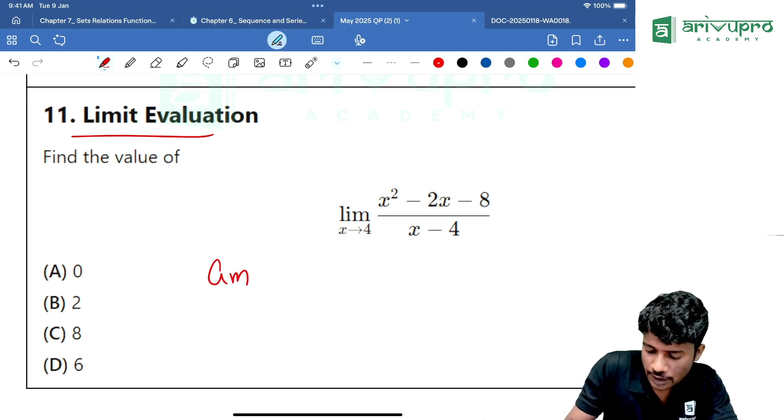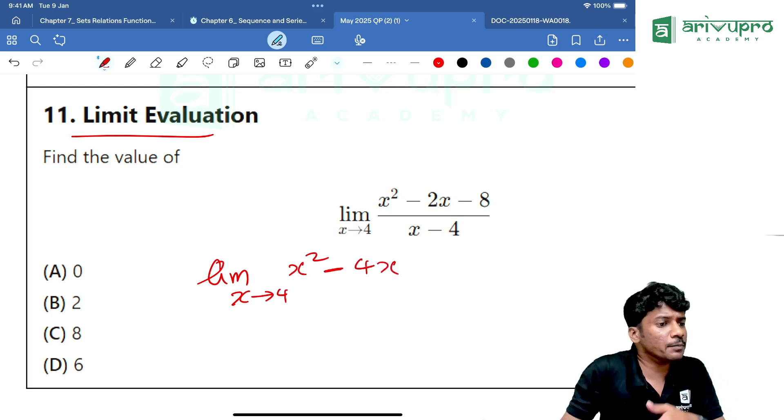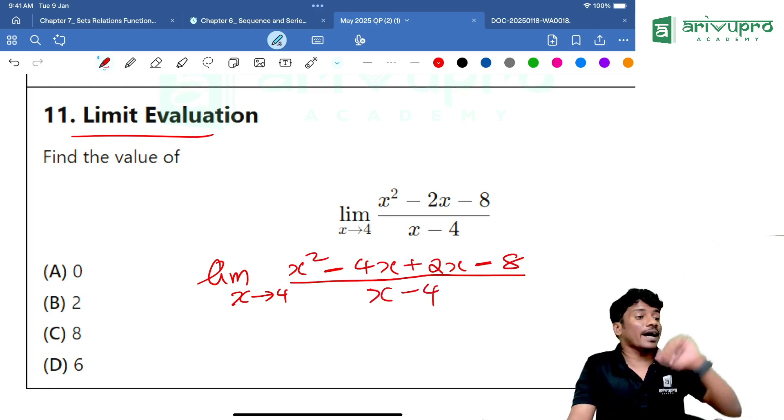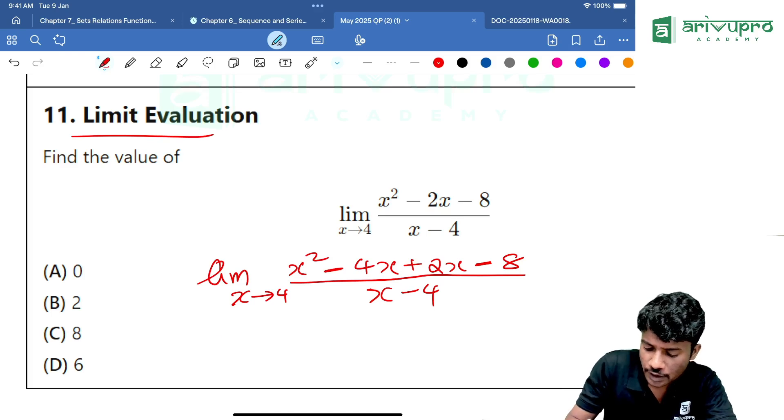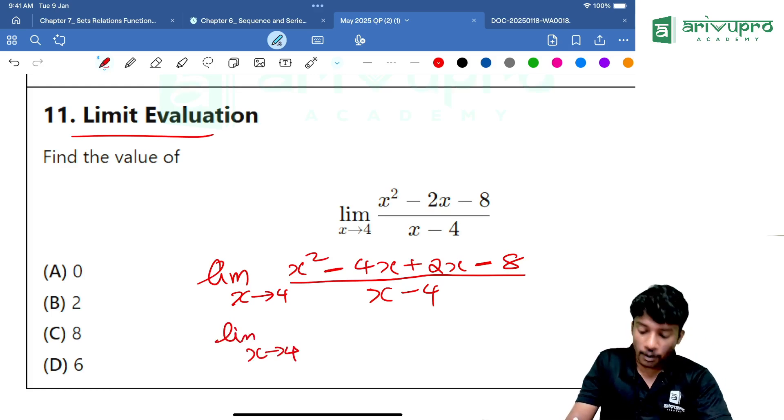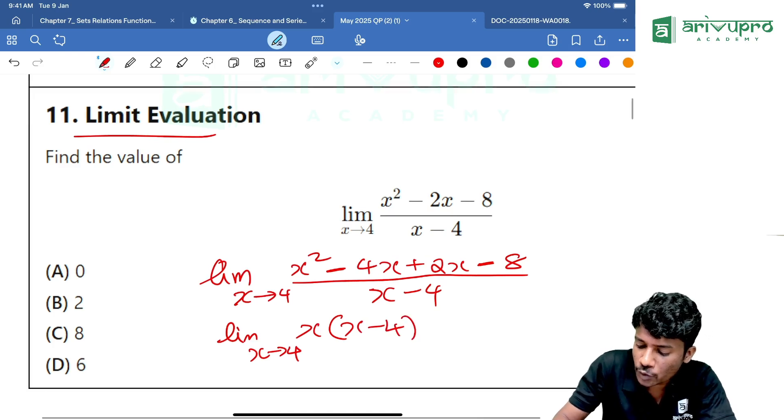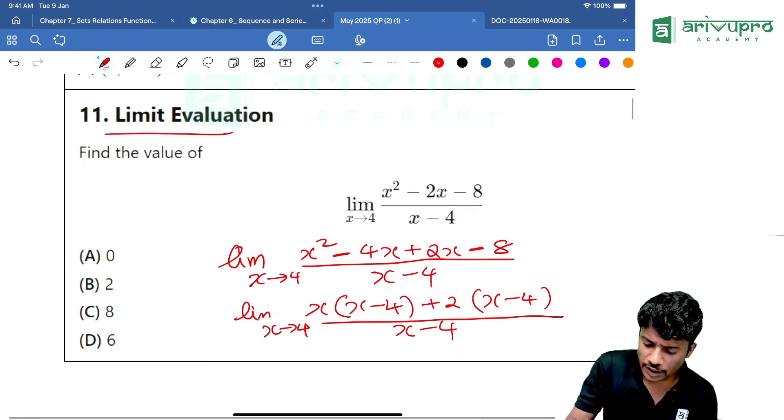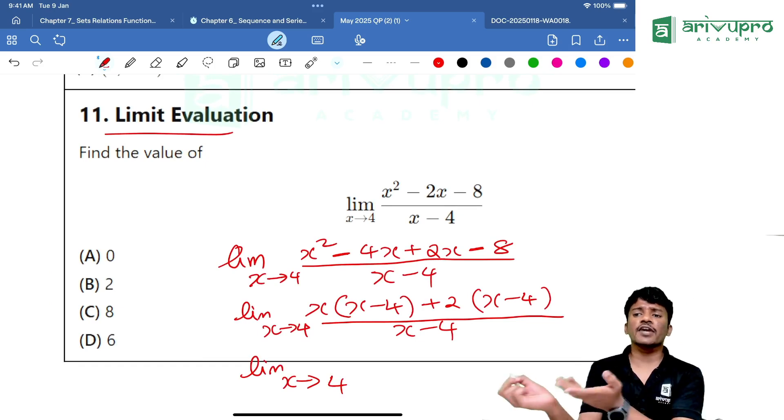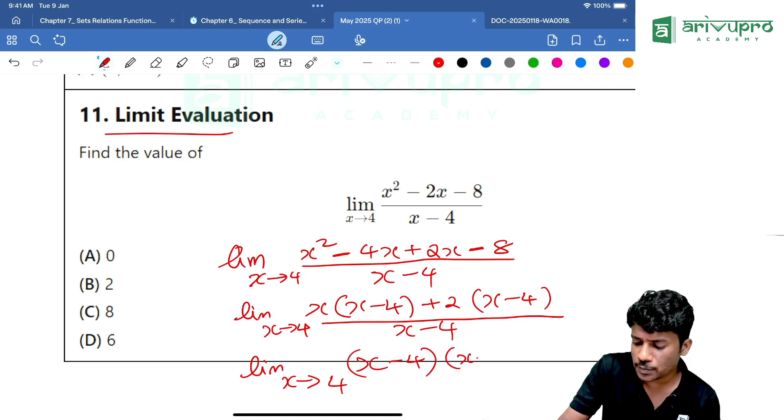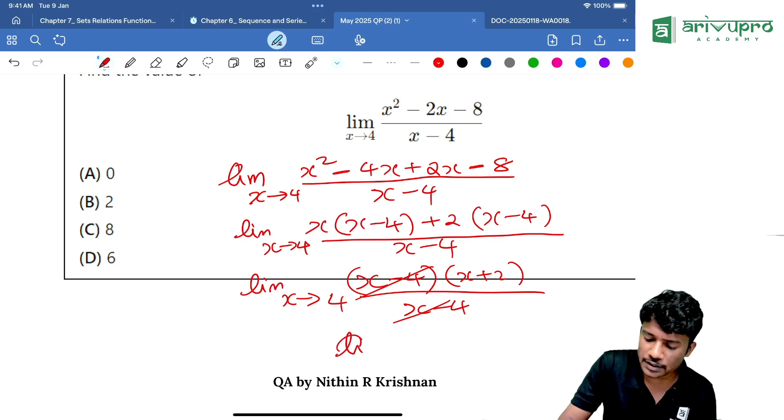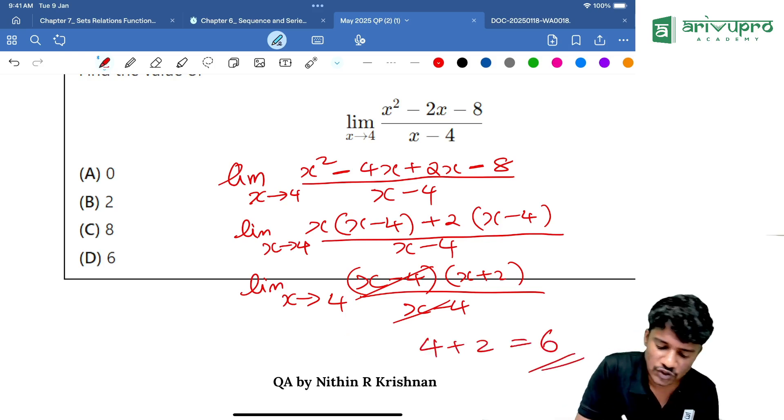So, can I write it as limit X tends to 4. Instead of X square, I will write X square itself minus, can I write it as 4X? If I write minus 4X, then how much should be there? Plus 2X minus 8. The entire thing is divided by X minus 4. Now, what is common in the numerator? That means X is common. That means X into X minus 4. Then 2 is common. That means plus 2 into X minus 4. The entire thing is divided by X minus 4. You can write it as limit X tends to 4. X minus 4 common. That means X minus 4 into X plus 2. The entire thing is divided by X minus 4. Cancel, cancel. Apply the limit. Applying the limit, it will become 4 plus 2 which is equal to 6 option D.